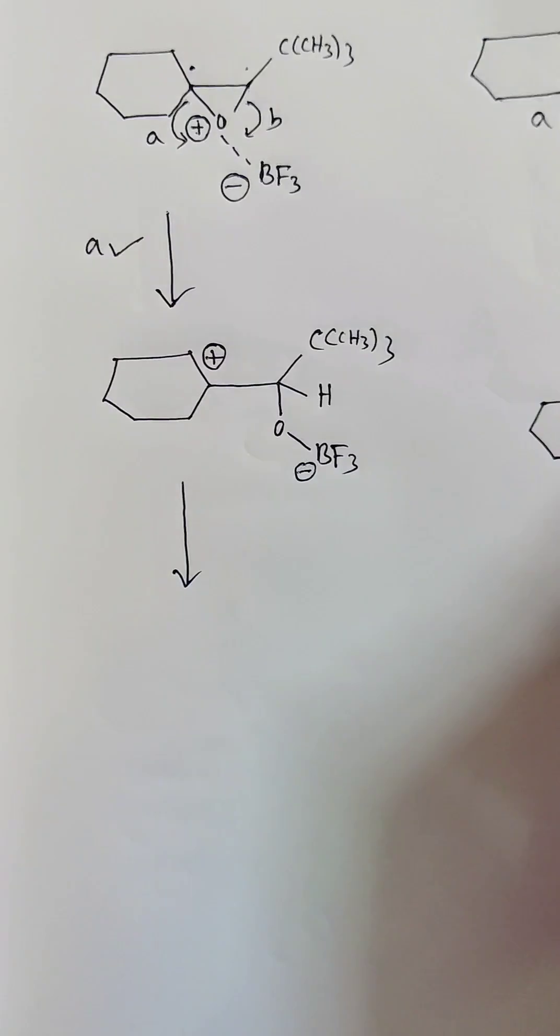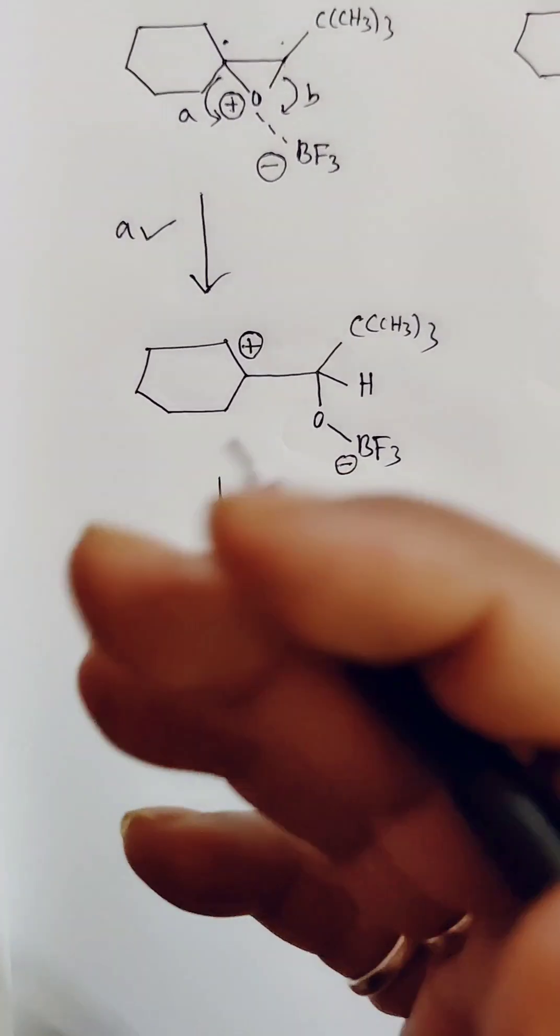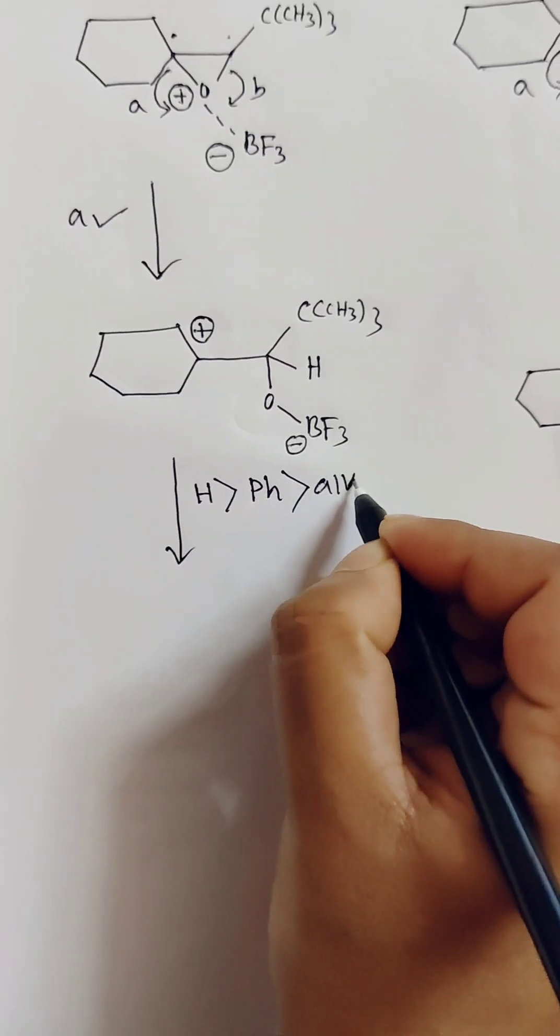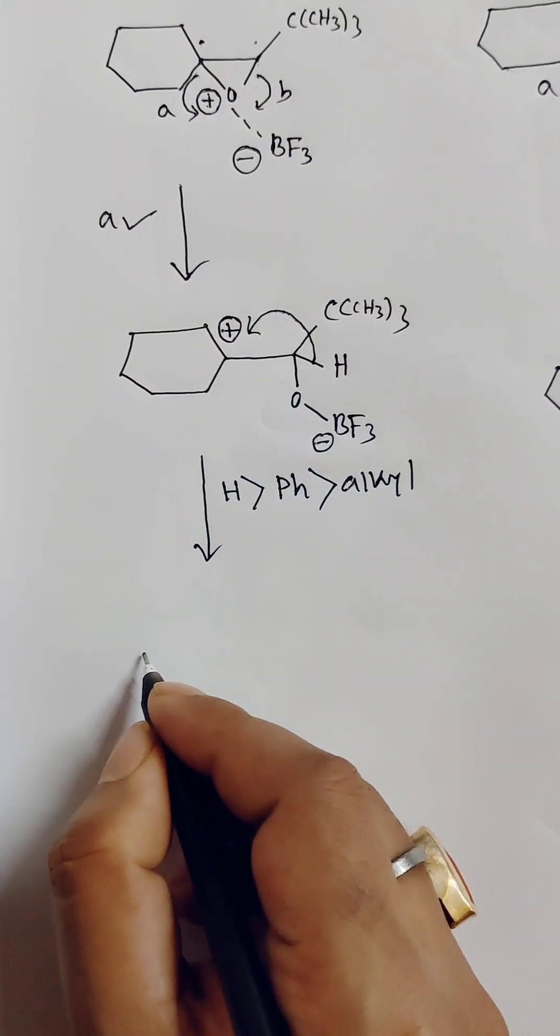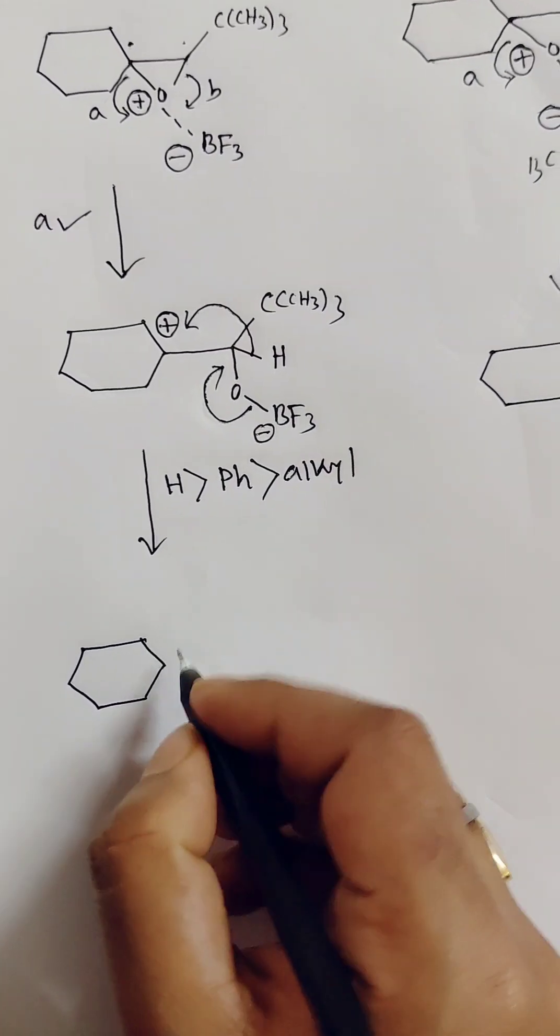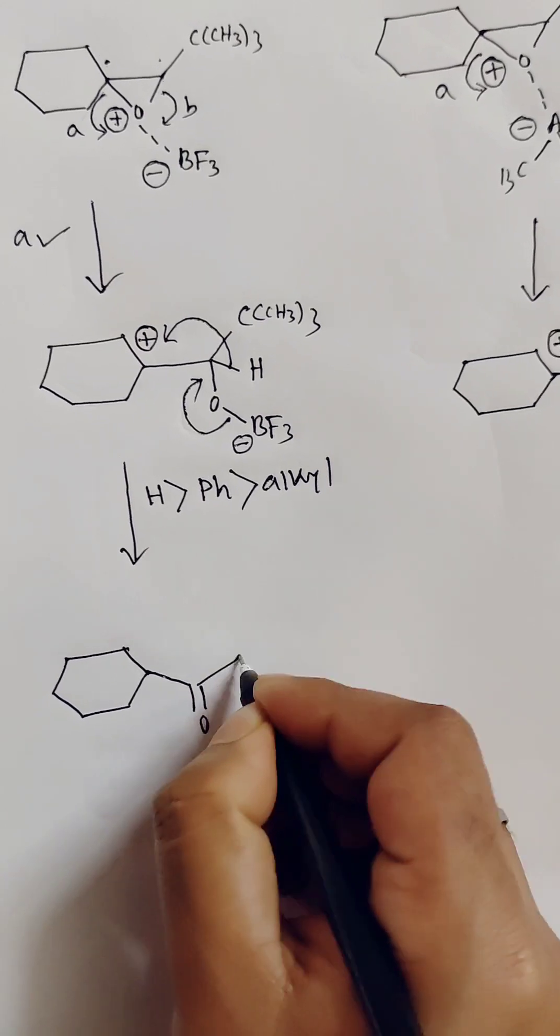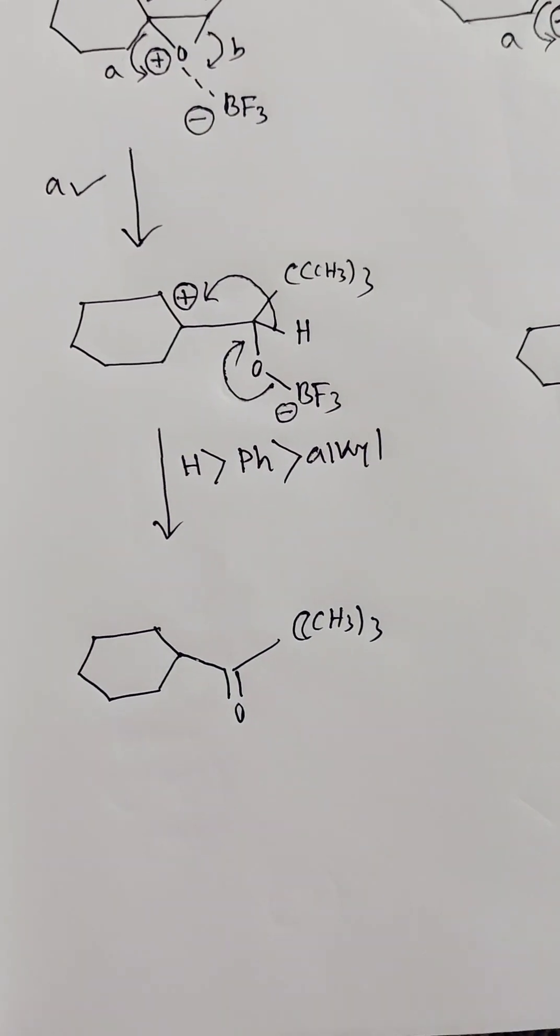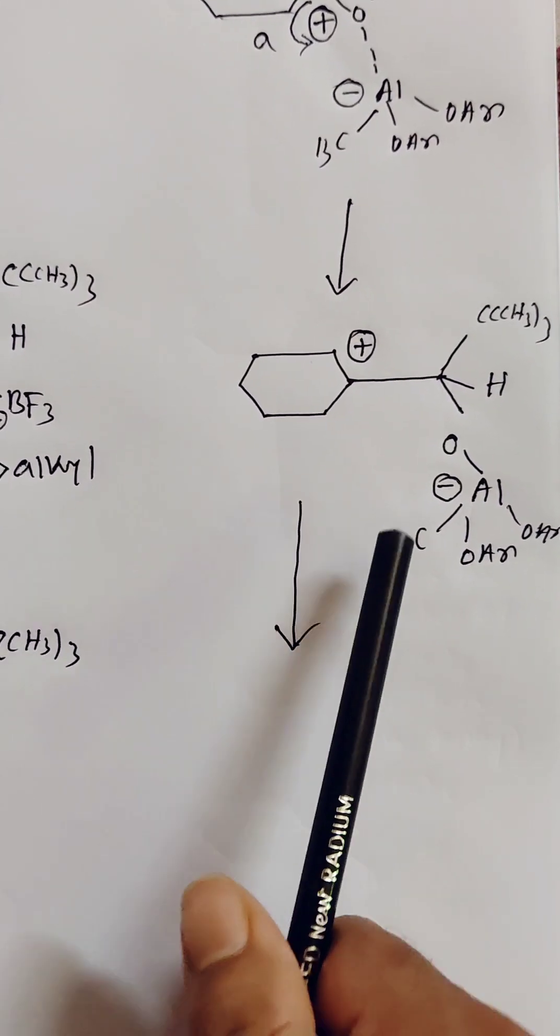Hydrogen is present here. Now we all know the migratory aptitude order: hydrogen, then Ph, then alkyl (3° > 2° > 1°). So in the first case, hydrogen will migrate, leading to the formation of a ketone. But if we consider this case...